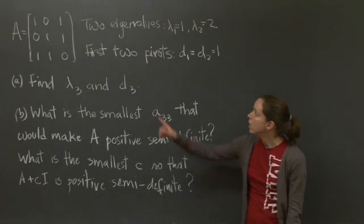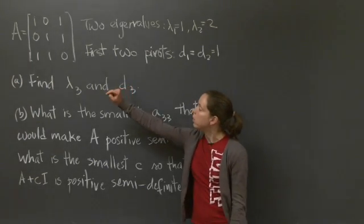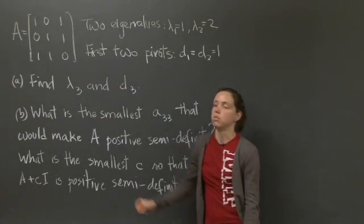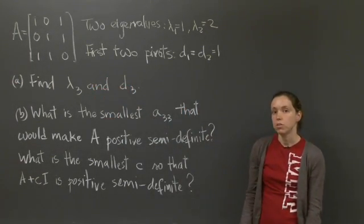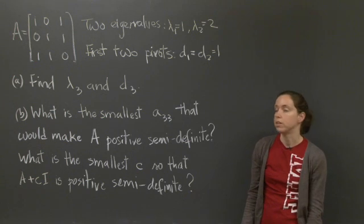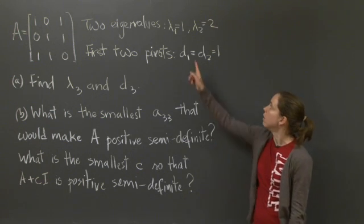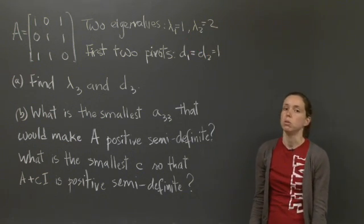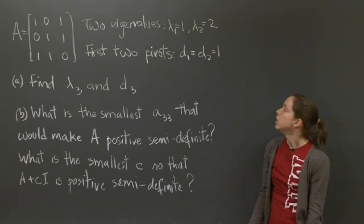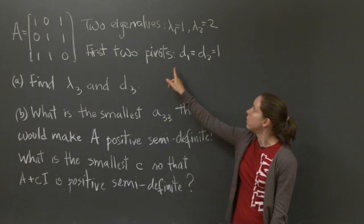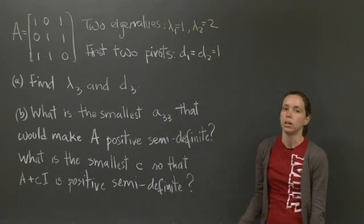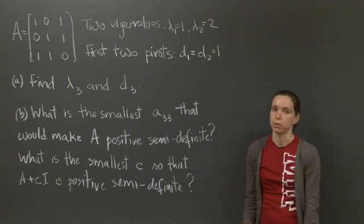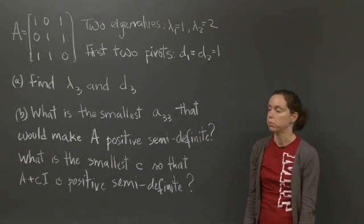It's about a matrix A: 1, 0, 1, 0, 1, 1, 1, 1, 0. We know that this matrix has two eigenvalues, 1 and 2. And we also know that if we do elimination, the first two pivots will be 1 and 1. Here are two questions about this matrix.